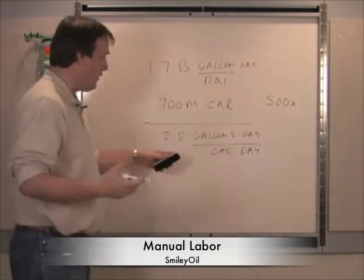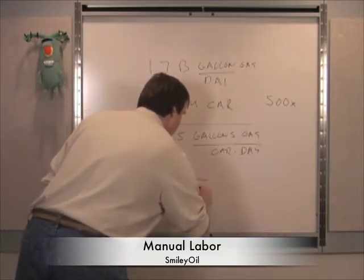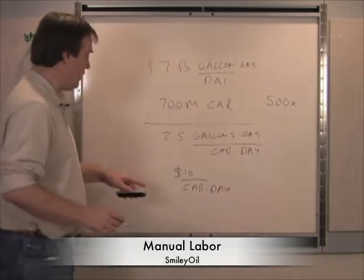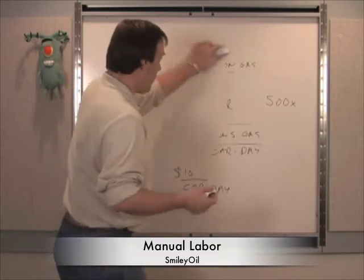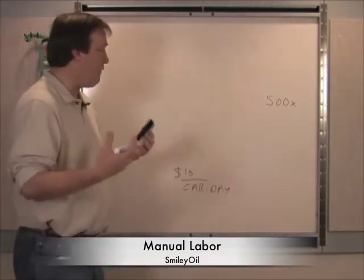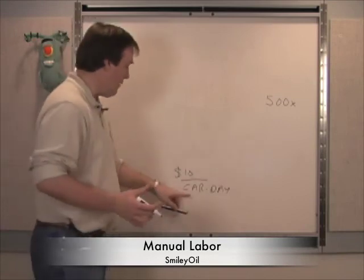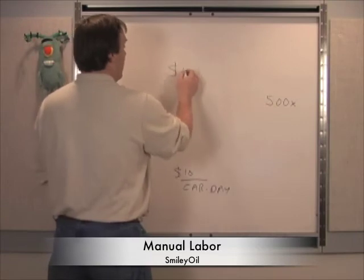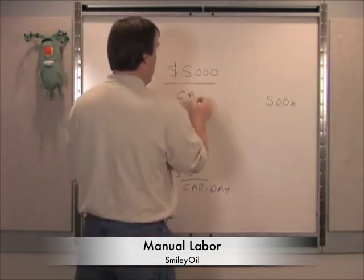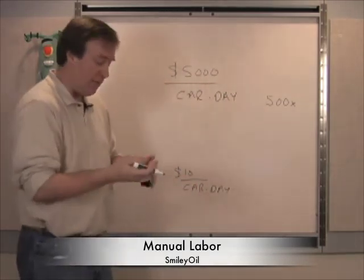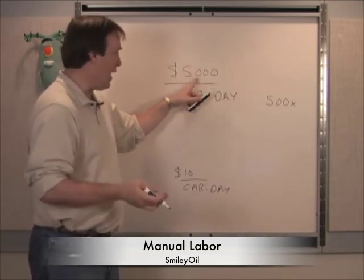Multiplying by four dollars a gallon, we are all spending about $10 per car per day. Now applying the 500x amplifier we calculated — gasoline gives us a 500x increase in power compared to manual labor — so 10 times 500 is $5,000 a day in manual labor equivalent per car per day. Every single person among the 700 million people driving cars is getting $5,000 in manual labor every day.